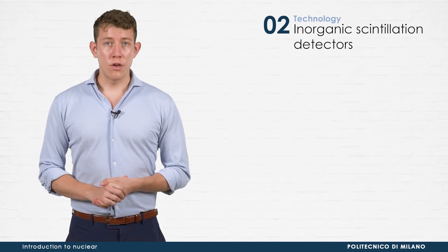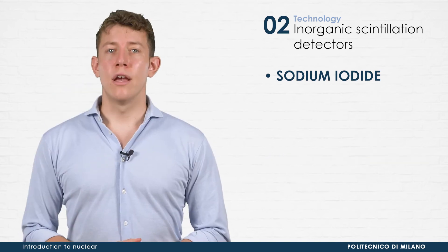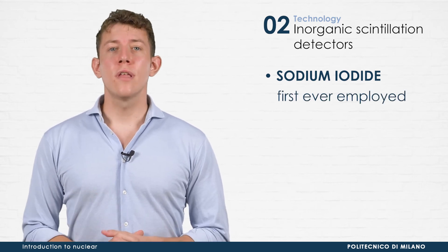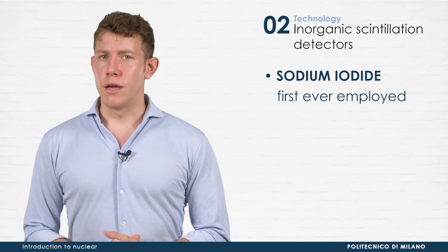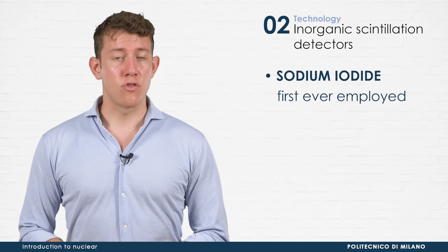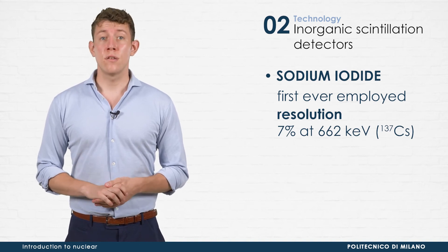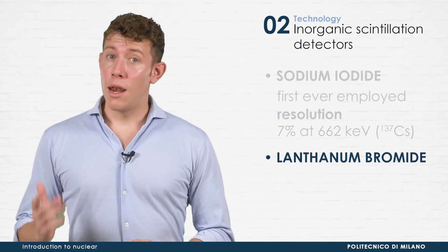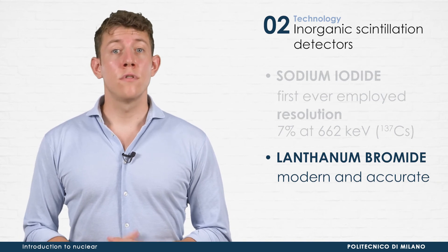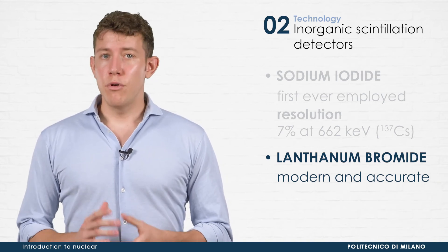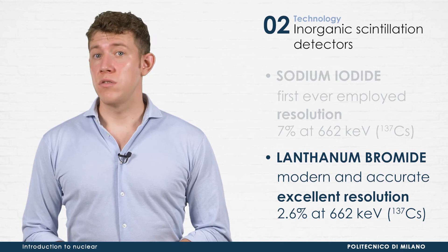The two most important scintillation detectors are sodium iodide and lanthanum bromide. Sodium iodide with thallium activation was the first ever employed scintillating material for gamma spectroscopy in 1948, and still finds use in modern gamma spectroscopy. It is characterized by an energy resolution of about 7 percent at 662 kilo electron volts. Lanthanum bromide with cerium activation is a more modern and more accurate alternative, providing an excellent resolution of around 2.6 percent at 662 kilo electron volts.